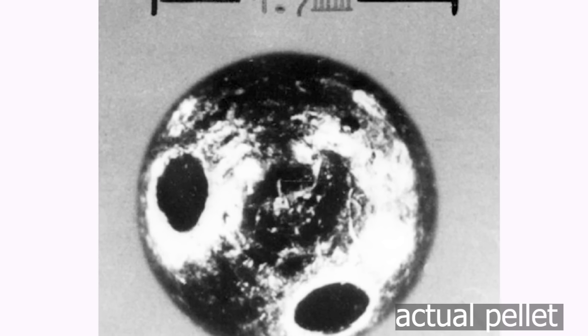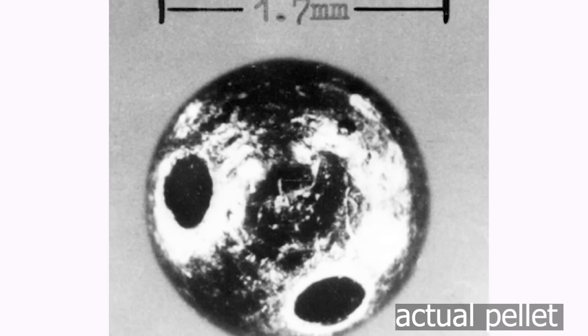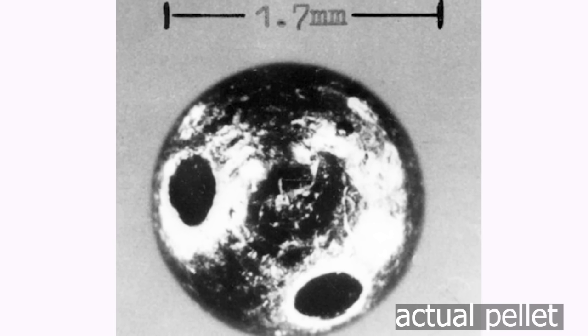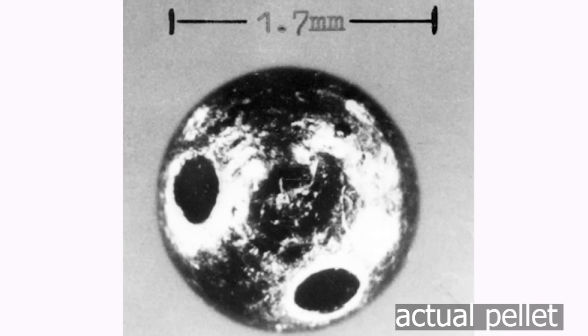During the autopsy, the coroner found a pellet lodged in the back of Markov's leg. The pellet was 1.7 mm in diameter, was 90% platinum, and had two holes drilled in it which held the ricin.